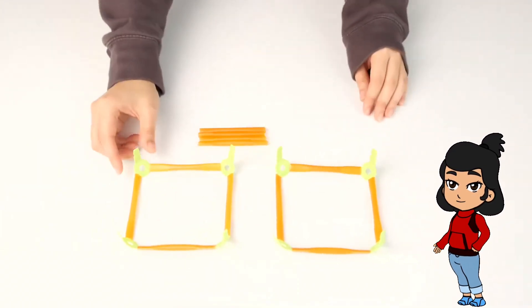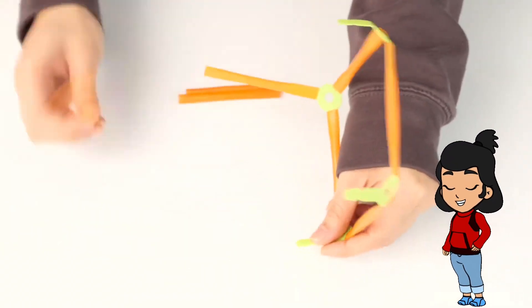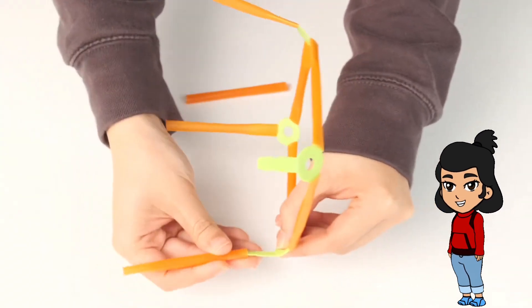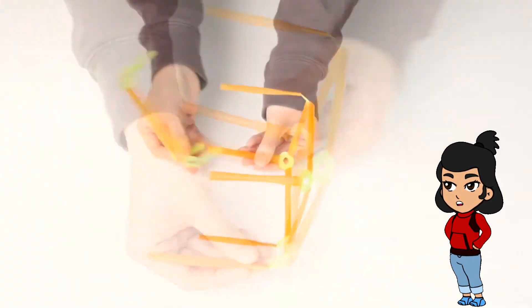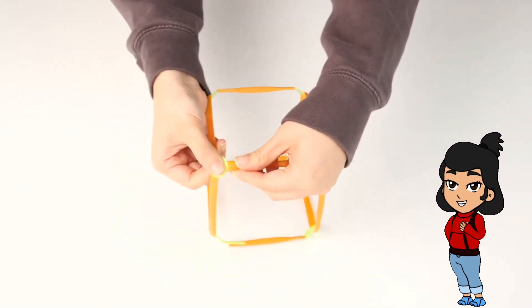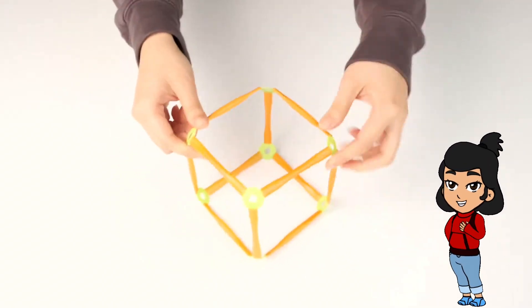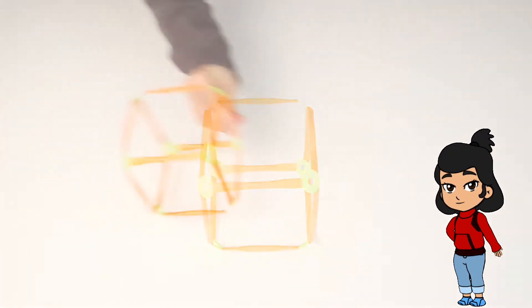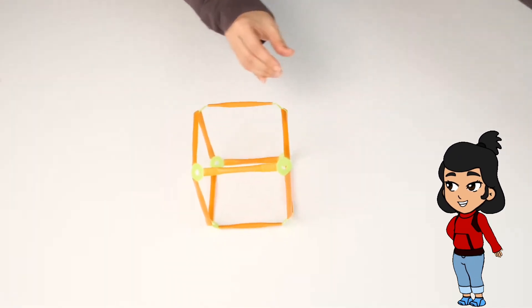Step 2: Repeat this for all straws and connectors. Step 3: Connect the corners of these squares with the remaining straws, forming a cube. And there you have it, your very own 3D square or hexahedron made with Strawbees.